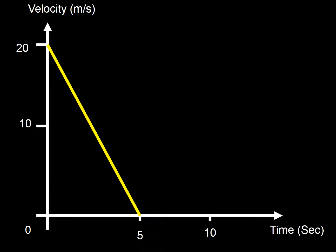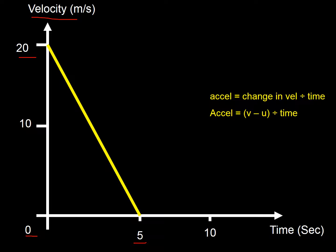Now this one does the opposite — we're still on velocity but it goes from 20 down to zero in 5 seconds. Using acceleration equals change in velocity divided by time: (0 minus 20) divided by 5 gives minus 4 meters per second squared. The minus four means it's slowing down — it's decelerating. The forces aren't balanced; friction or braking forces are making it slow down.